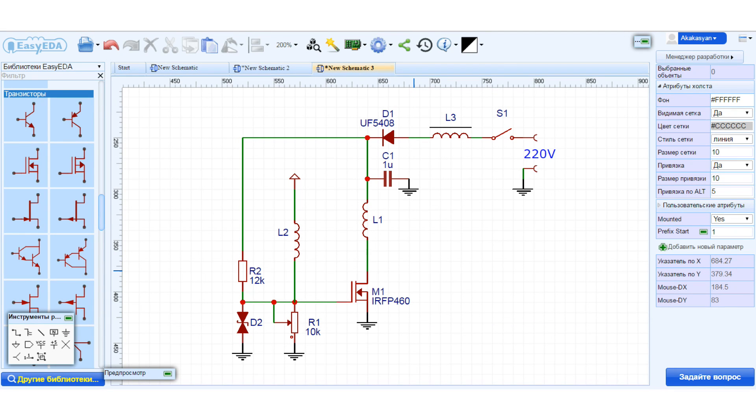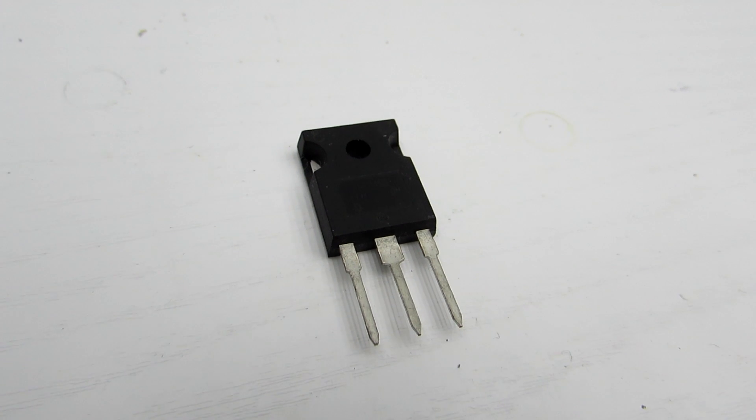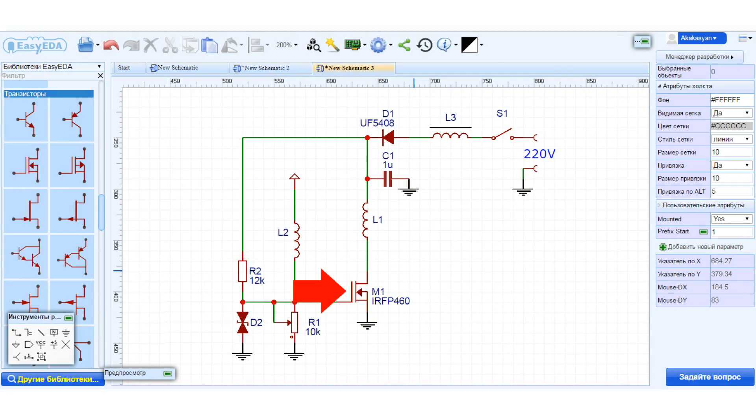Our version is powered directly from mains, 220 volts, and includes a powerful field-effect transistor. This allows for great power compared with the classic low-voltage Brovin's catcher.